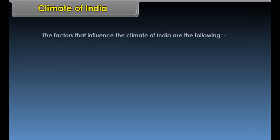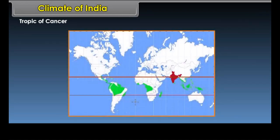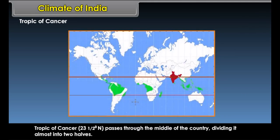The factors that influence the climate of India are: the Tropic of Cancer, the Himalayas, the peninsular shape of South India, and relief. The Tropic of Cancer passes through the middle of the country, dividing it almost into two halves.